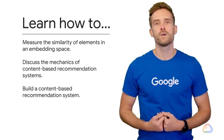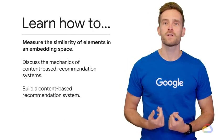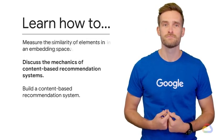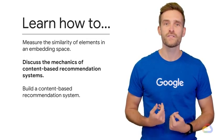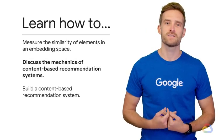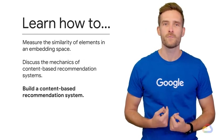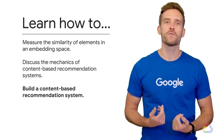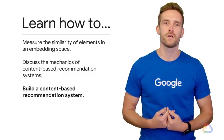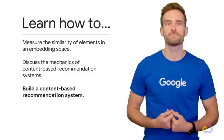In this module, we'll learn how to measure the similarity of pairs of elements in an embedding space, we'll discuss the mechanics of content-based recommendation systems and really see how they work, and we'll see how to build our own content-based recommendation systems — one to recommend movies and one to recommend articles.